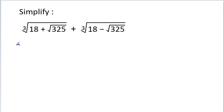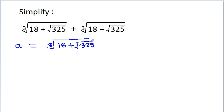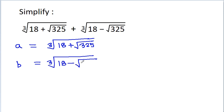So, if we take A is equal to ∛(18+√325) and B is equal to ∛(18−√325), then we have to simplify A plus B.